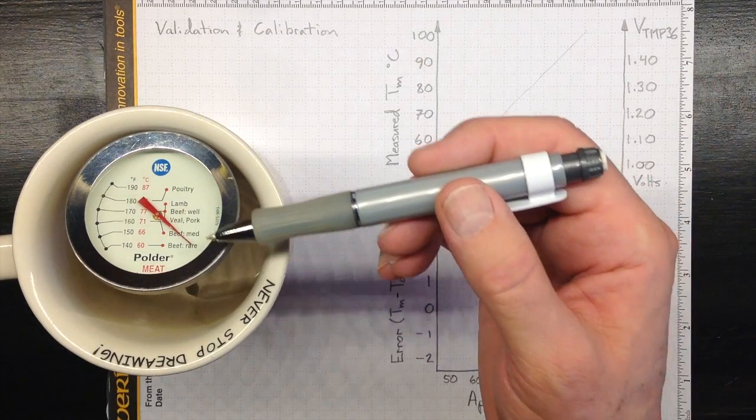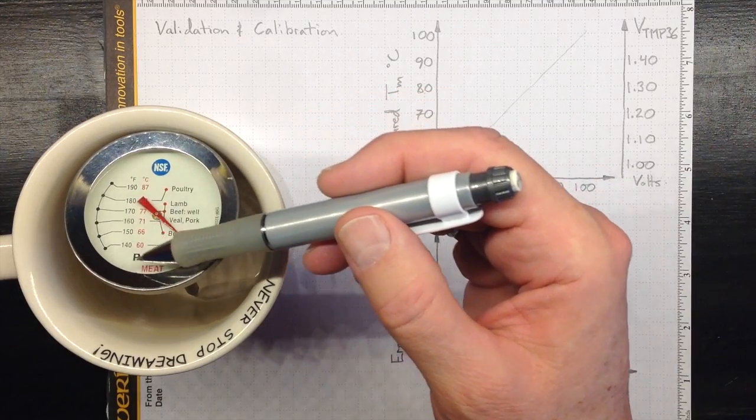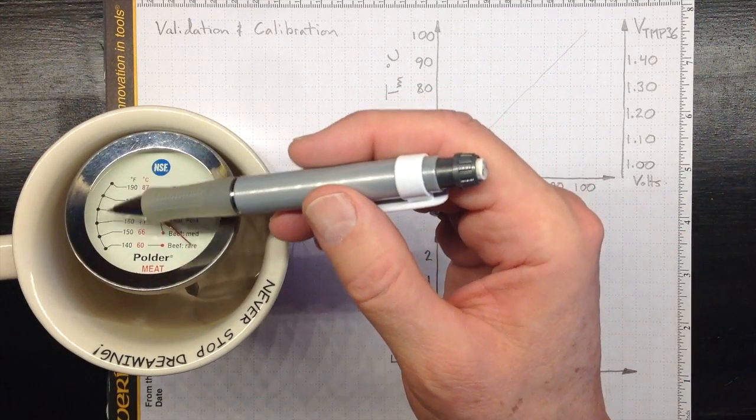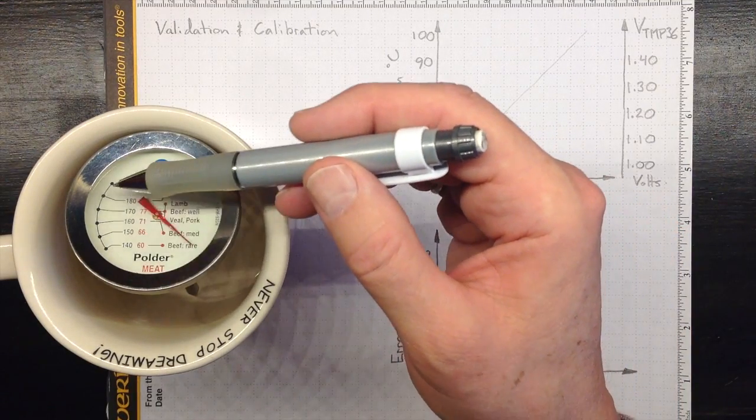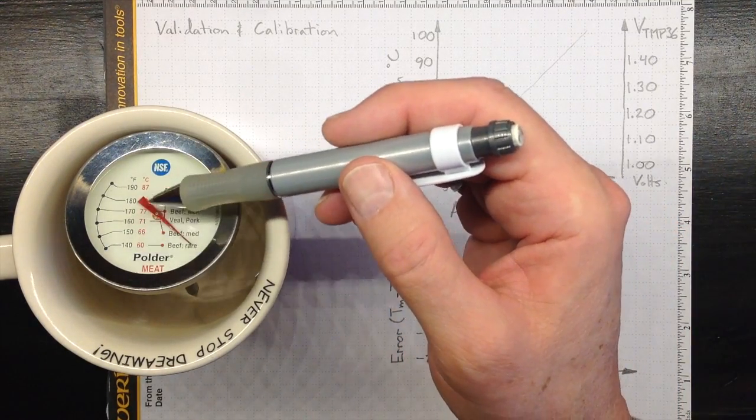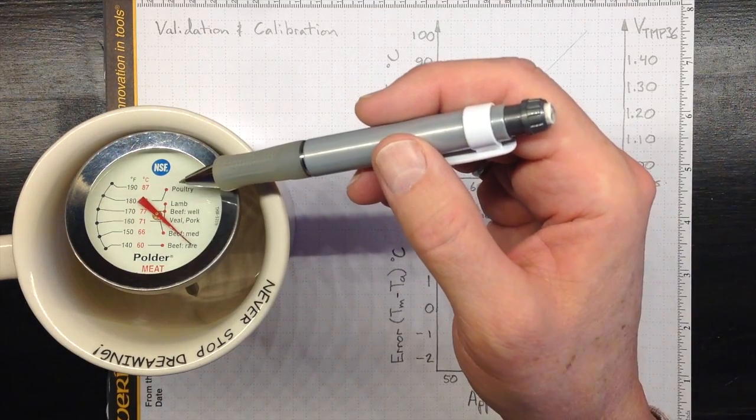So for this meat thermometer, we can look and see that the needle right now is pointing to somewhere that might match up with room temperature if we extended that scale around to there. I'd like to see how it reads in the region of interest, the range from about 60 degrees up to about 90 degrees Celsius, that corresponds to how well done my meat is.